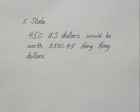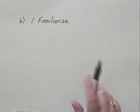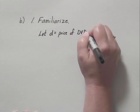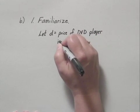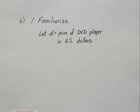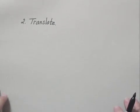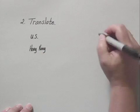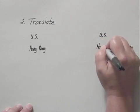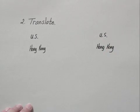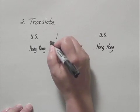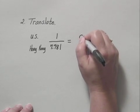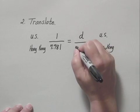Now we move to Part B, the question about the DVD player, and start the five-step problem-solving process again. We let D equal the price of the DVD player in U.S. dollars. In step two, translate, we again write the proportion with U.S. dollars in the numerator and Hong Kong dollars in the denominator. The exchange rate gives us 1 U.S. dollar to 7.781 Hong Kong dollars, and that equals D over 795.